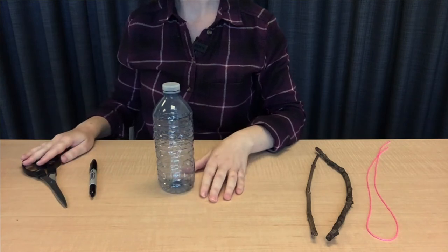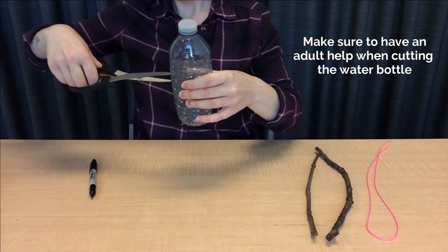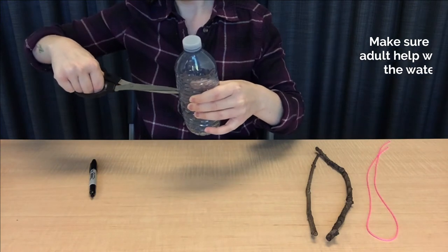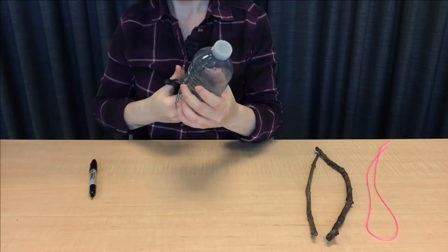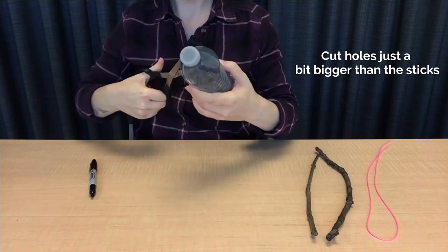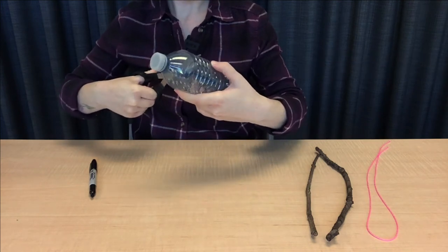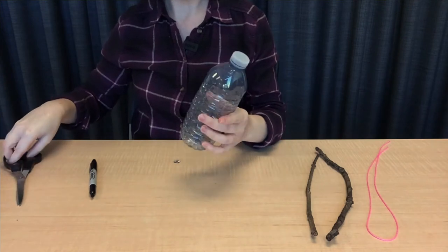Next with our scissors we'll squeeze our water bottle a little bit so that we can puncture with our scissors. We'll make a hole a little bit bigger than our stick so that the birds can actually get at the bird feed.